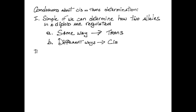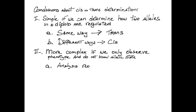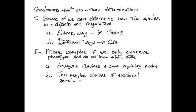The situation is more challenging if we can only observe phenotypes and do not know the allelic states. To carry out the analysis, we need a clear regulatory model. This may become obvious if additional genetic and biochemical information is provided.